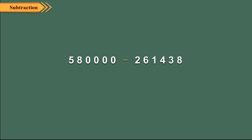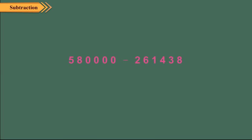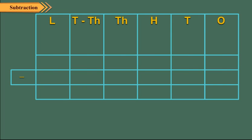Let us take an example where regrouping is involved. Let us find the difference between 580000 and 261438. Remember, to find the difference we always subtract the smaller number from the greater one. So arrange the numbers in columns and subtract. Starting with the ones: 0 is less than 8, so we regroup.